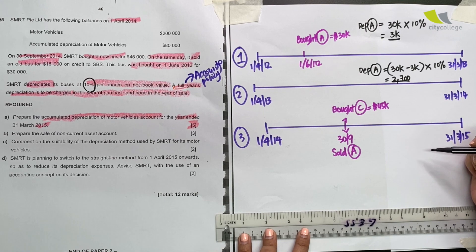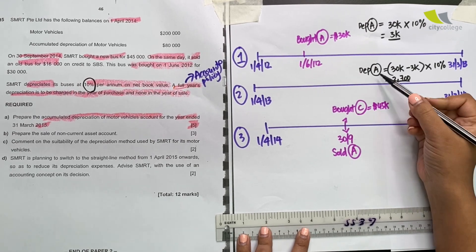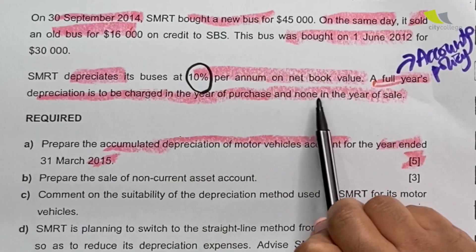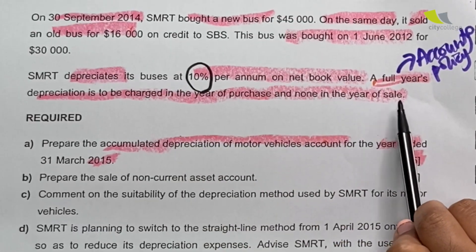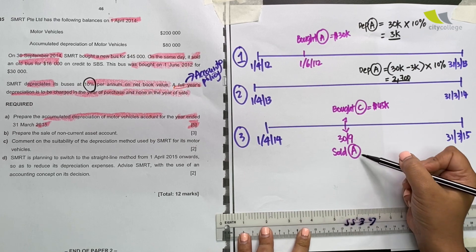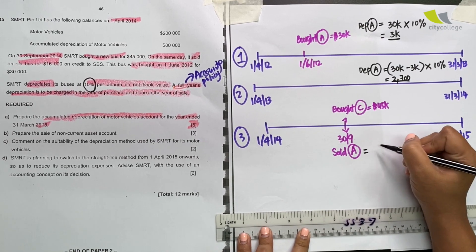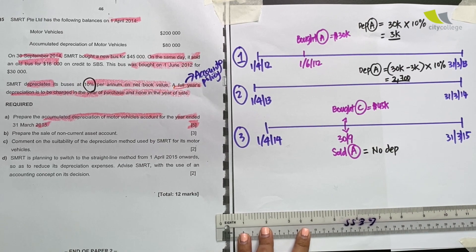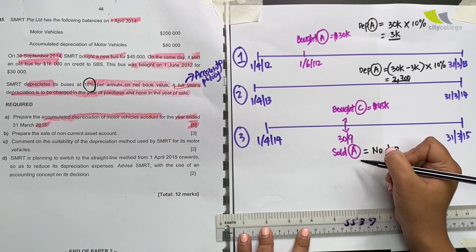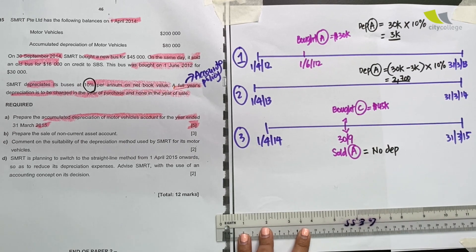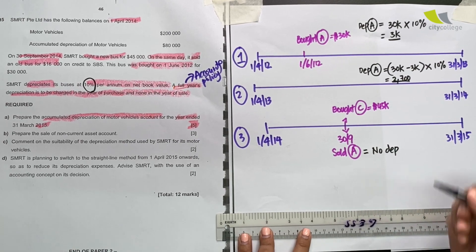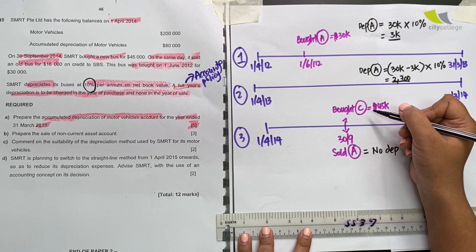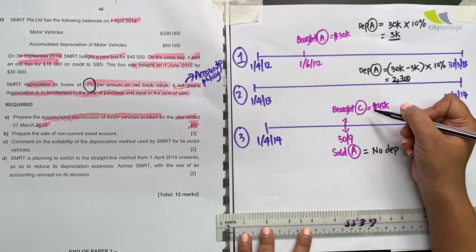In the third year, what are we left with? We still have A, but the question says, none in the year of sale. That means in the year of sale for the asset that you sell, there is no depreciation. But that is only for the asset you are selling. It doesn't refer to the other assets in the business.